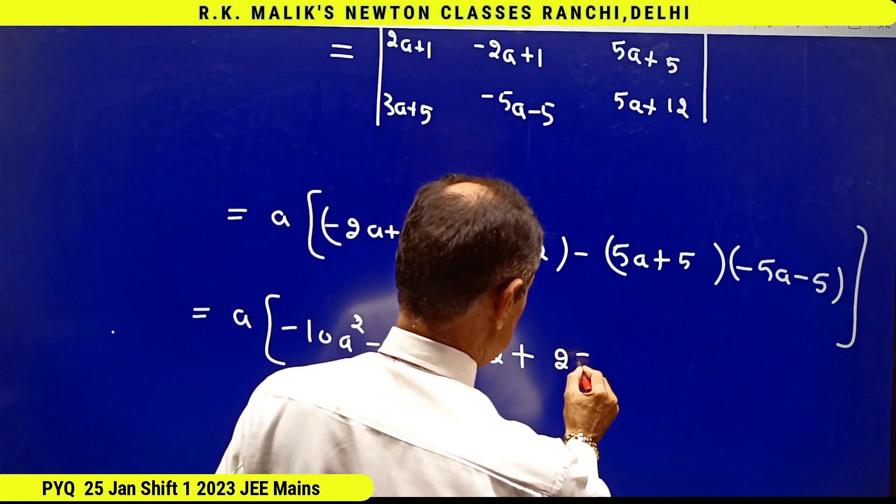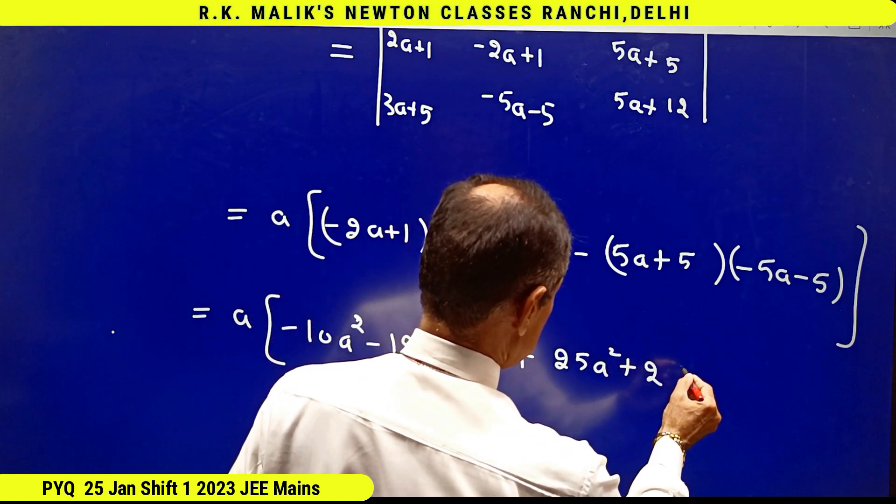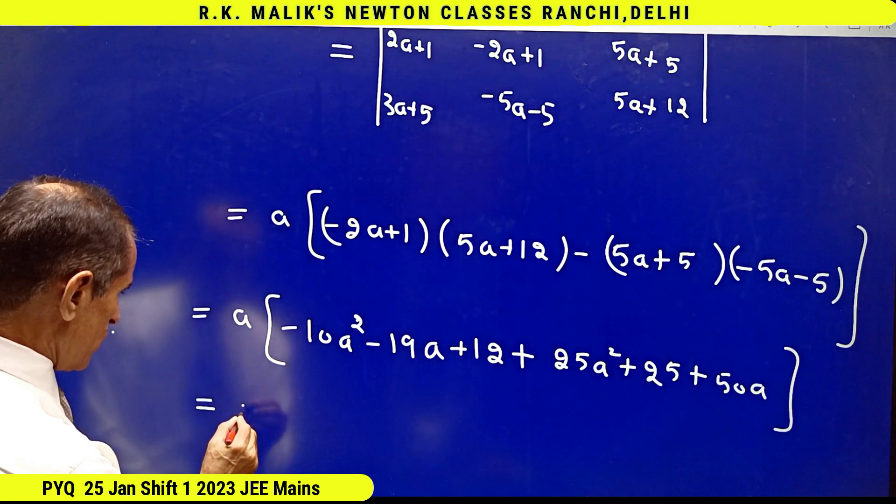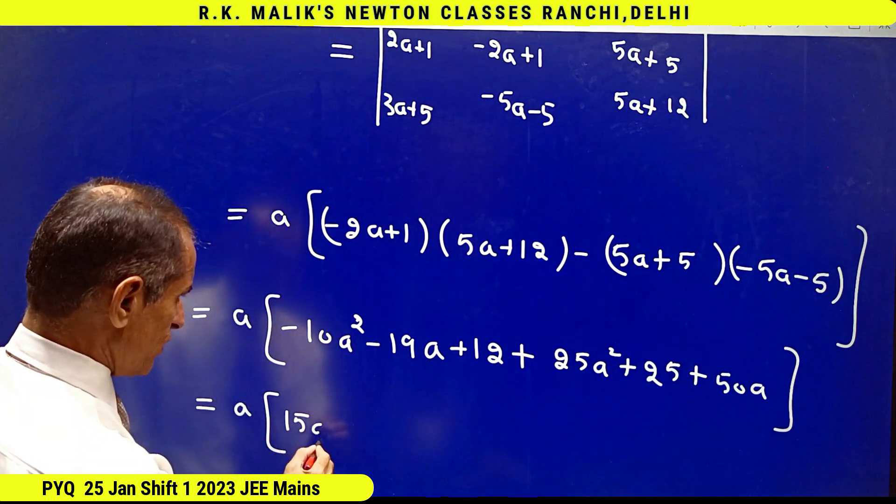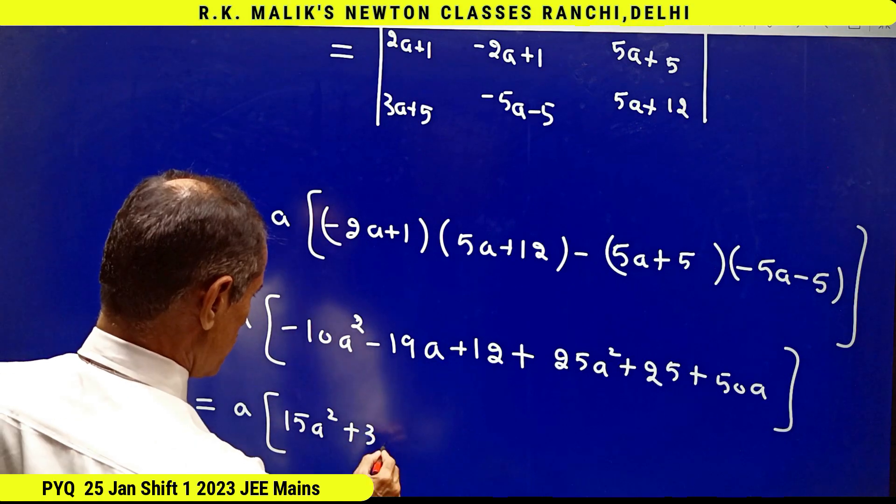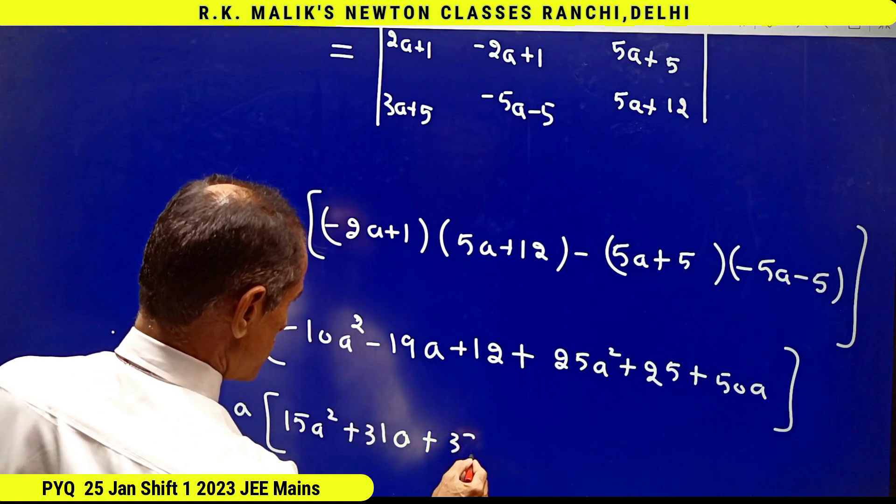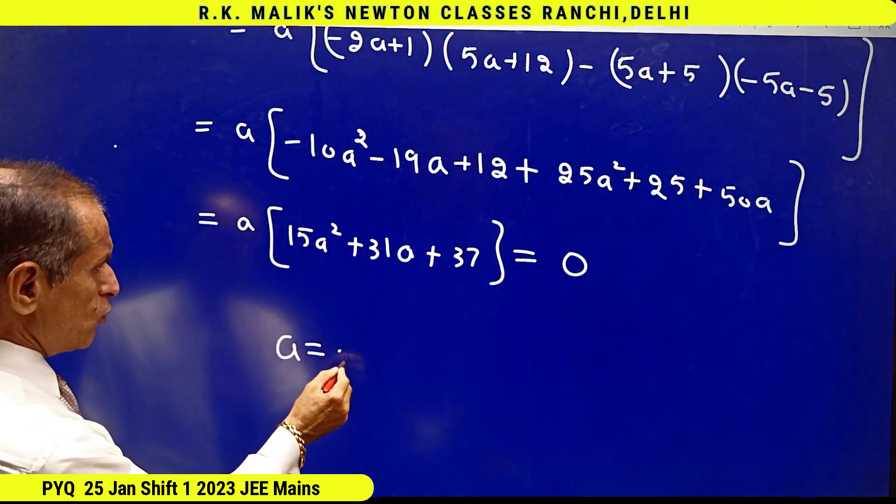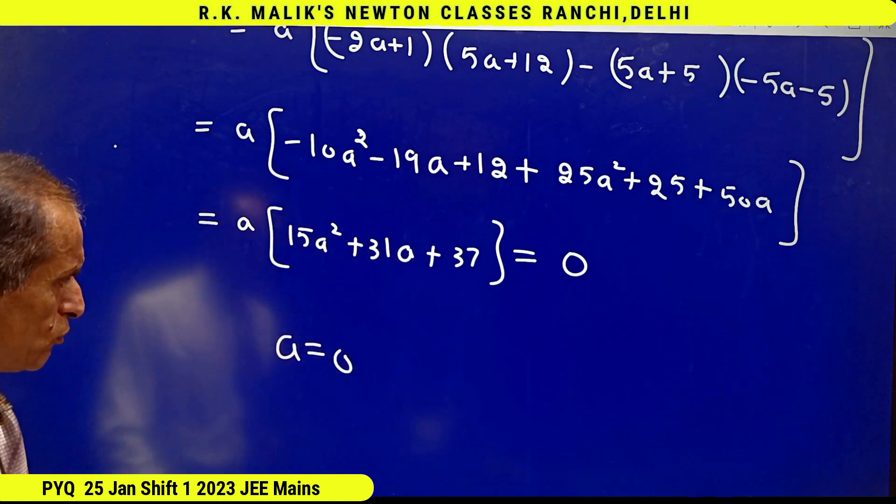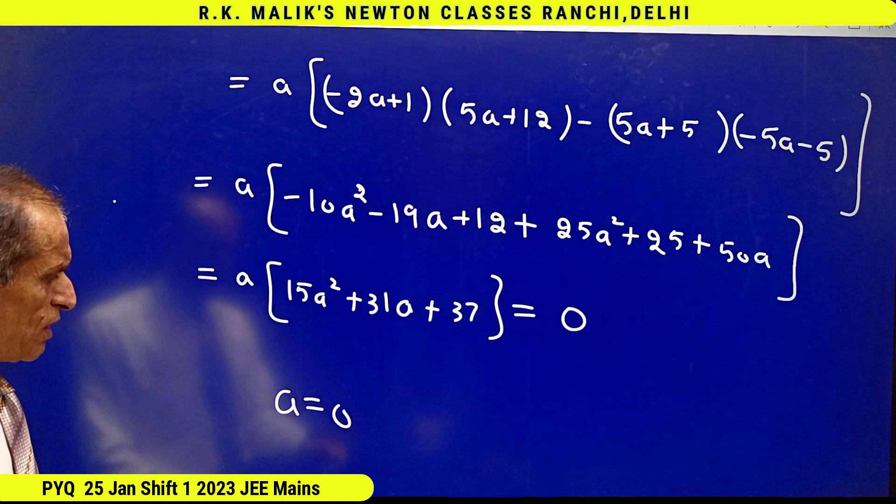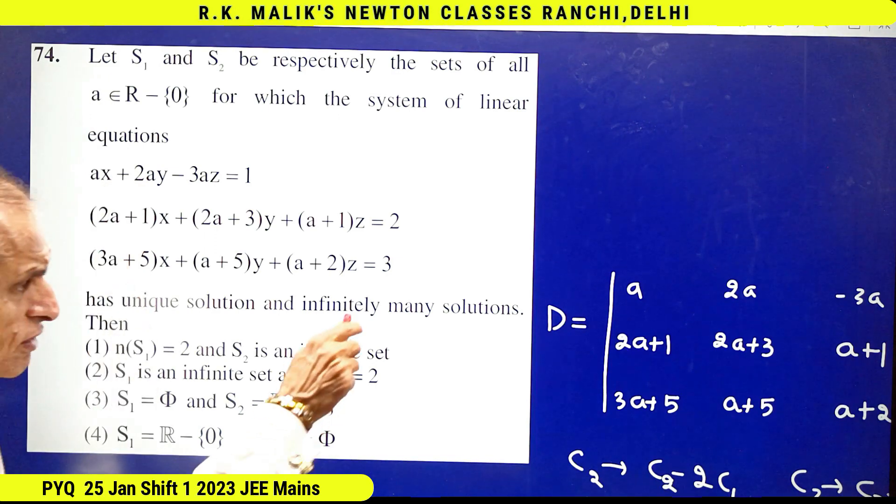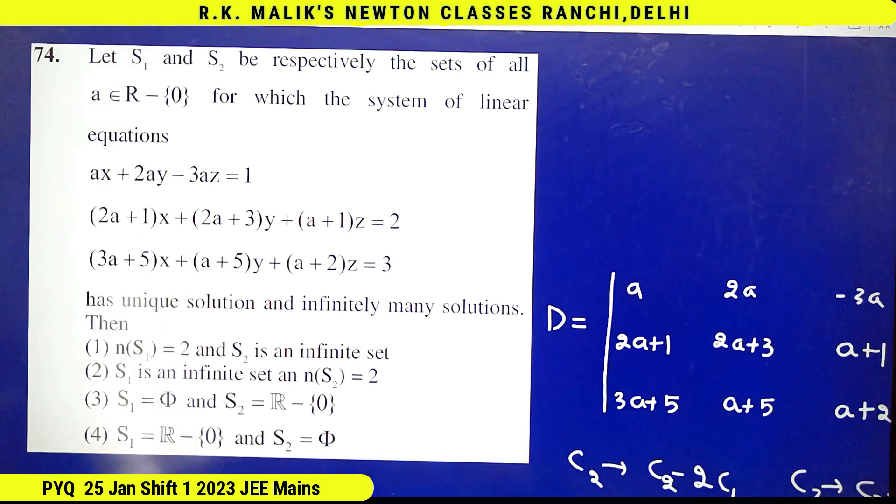That is a into 15a² plus 31a plus 37. And putting it equal to 0, I get the value of a as 0, because this equation has no real root. This is also rejected because it was given that a is a non-zero real number. Hence there is no value of a for which D becomes 0.